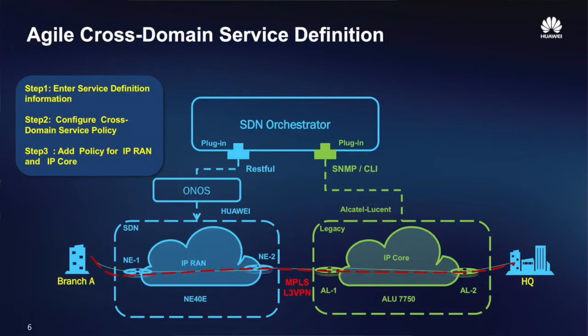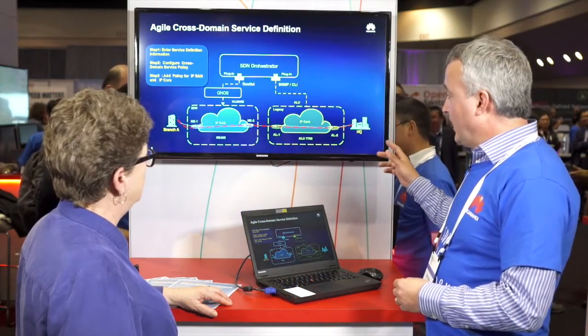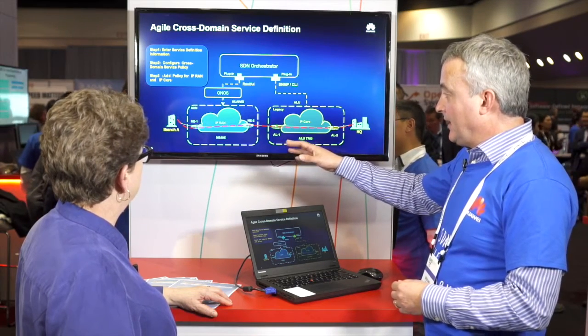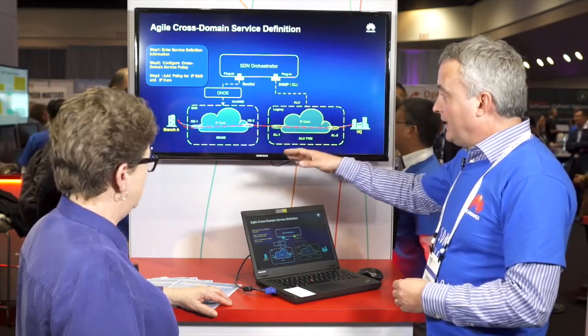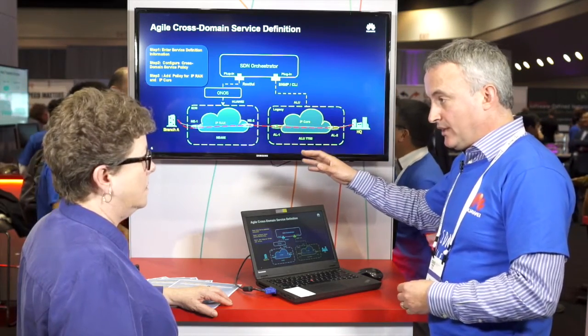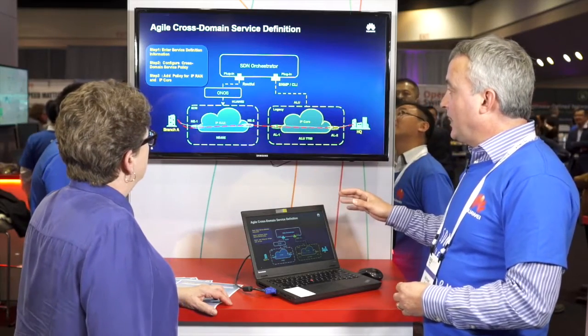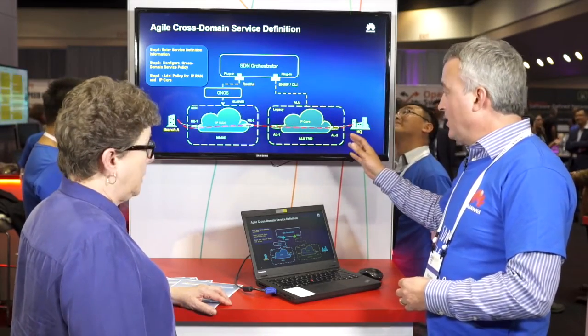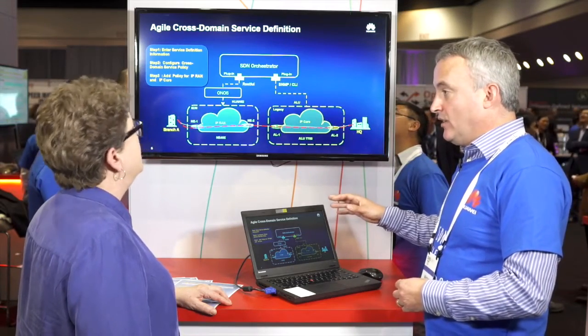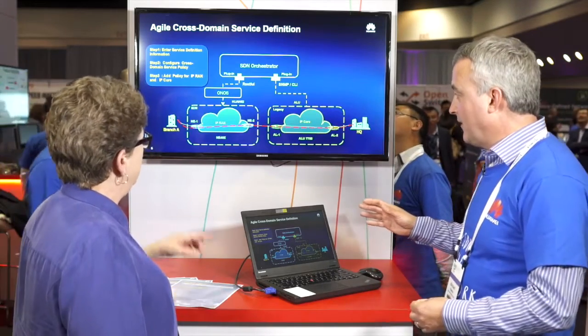For the demo, we have set up an environment that reflects different legacy and SDN-controlled networks. We have branch offices connected into a headquarters over an IP-RAN network in the access, going over an IP core. In the access, we have Huawei devices controlled by an Onus SDN controller, with a RESTful-based interface. On the right-hand side, we have ALU devices in the IP core, using SNMP and CLI. We're agnostic of which protocols we use, and that's true with the controller as well — it's designed to be protocol-agnostic and adapt to different protocols as they evolve.